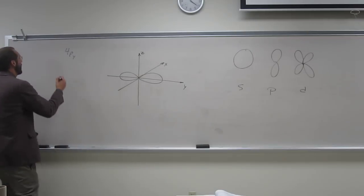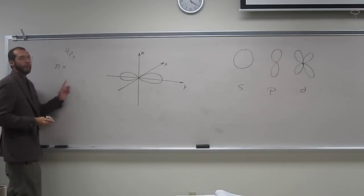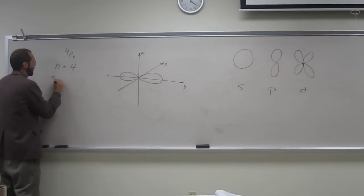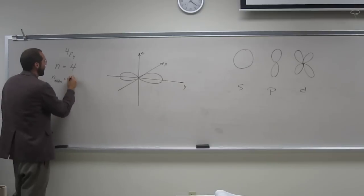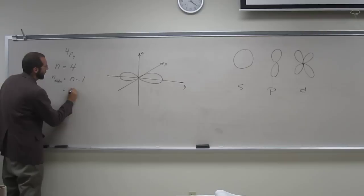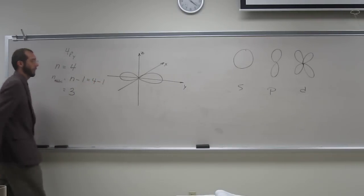Well, the way to find the number of nodes is, you know the energy level of this, everybody hopefully could tell me the energy level of this is 4. So the number of nodes is going to be the energy level minus 1, so the number of nodes equals 3, because 4 minus 1 equals 3.